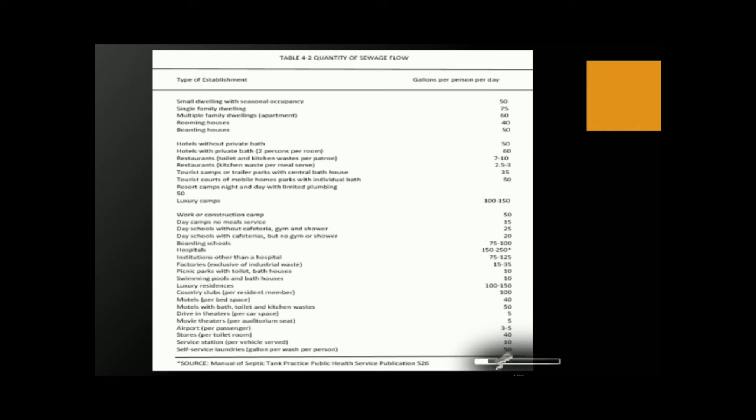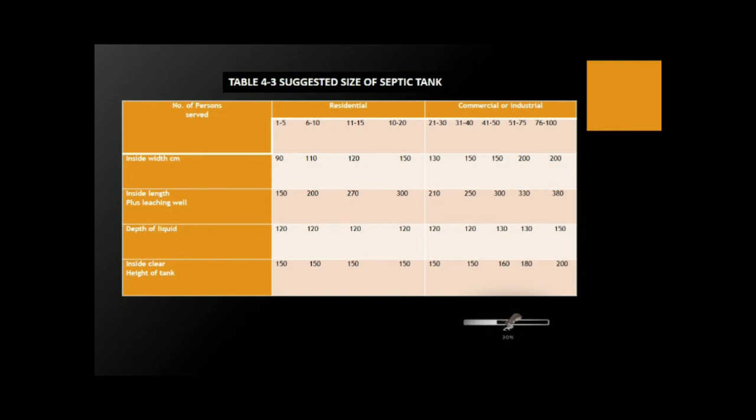Table 4.2 shows the quantity of sewage flow — the rate of wastewater discharge per person per day for each type of establishment. For example, a small dwelling with seasonal occupancy discharges 50 gallons per person per day, and a single-family dwelling discharges 75 gallons per person per day. Table 4.3 shows the suggested size of the septic tank by number of persons to be served, including inside width, inside length, depth of liquid, and inside clear height for residential and commercial or industrial use. Table 4.4 covers maximum allowance for sludge accumulation in a septic tank.